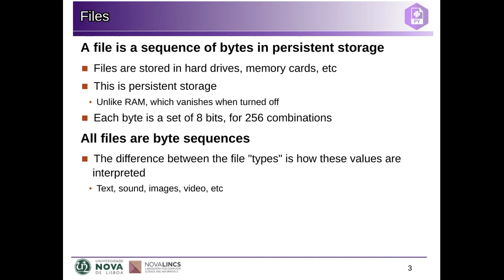Basically, when you store data in RAM memory, the RAM memory is very fast. But if you switch off the computer, the data in memory will disappear. Files are sequences of bytes — data that is stored in persistent storage. So this can be your hard drive, memory cards, external drive, and so on.